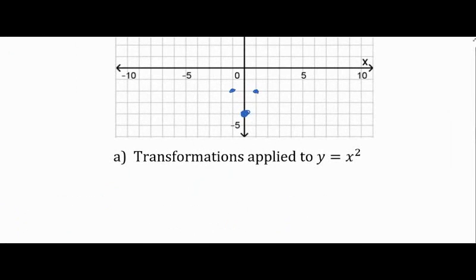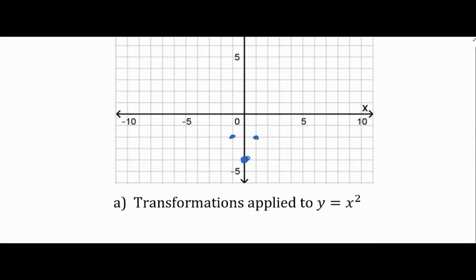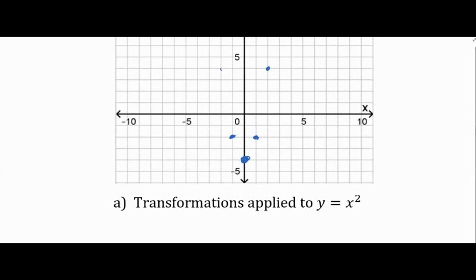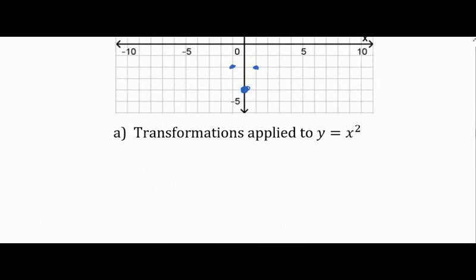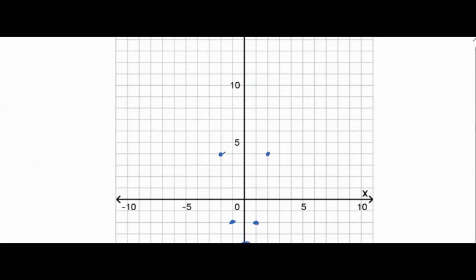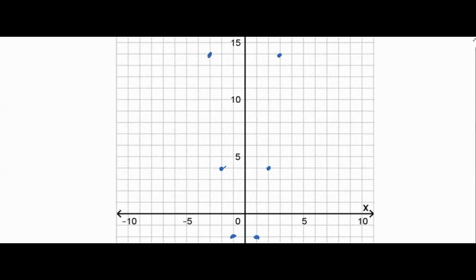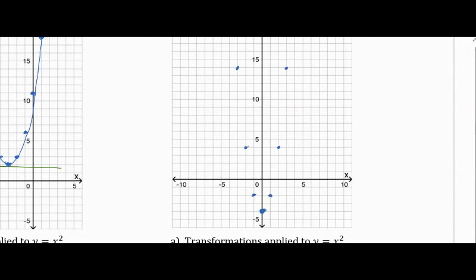So I go back to my vertex: over one, up two; back to the vertex, over two, up eight — one, two, three, four, five, six, seven, eight — and use symmetry to graph both sides at the same time. Then over three, up eighteen — I already went up eight, then I go up ten more, so eighteen total. Then draw a curve through it.